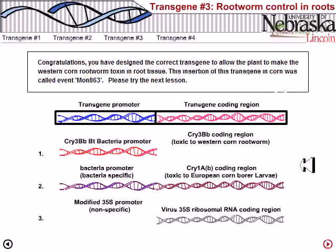This transgene allows the plant to make the western corn rootworm toxin in root tissue. The insertion of this transgene in corn was called the event MON863.